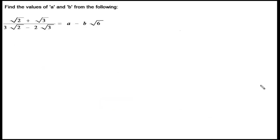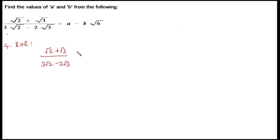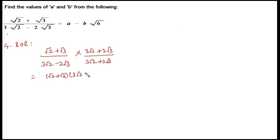Students, let's look at the fourth question. Here we have to find out the values of A and B. In order to find that, let's simplify the left-hand side by doing rationalization of the denominator. That is (√2 + √3) / (3√2 − 2√3), multiplied by (3√2 + 2√3) / (3√2 + 2√3).